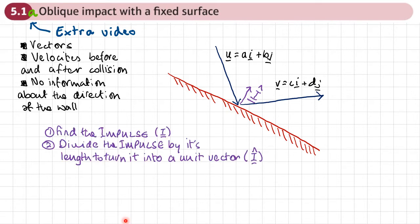We can find the impulse by computing m·v minus m·u, then turn it into a unit vector by dividing the impulse by its length. This gives us the unit impulse vector î, with a little hat to show it's one unit long.